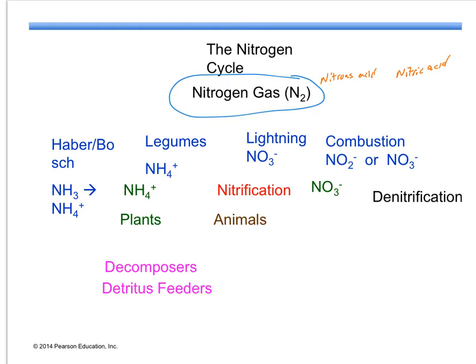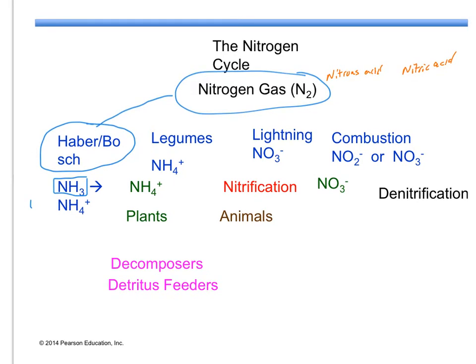Nitrogen fixation can take place in one of four ways. The first is a chemical process called the Haber-Bosch process. The Haber-Bosch process creates a compound called ammonia, and when it is combined with water, it forms the ammonium ion. The ammonium ion can be absorbed directly by plants.